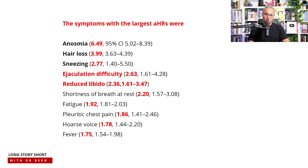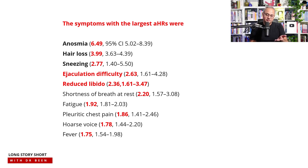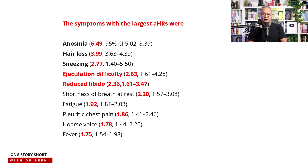Sneezing had an adjusted hazard ratio of 2.77 times. Importantly, the next two risk factors were unique to this study and not seen in others: ejaculation difficulty during the acute infection was associated with 2.63 times higher likelihood of developing long COVID, and reduced libido had an adjusted hazard ratio of 2.3 times.